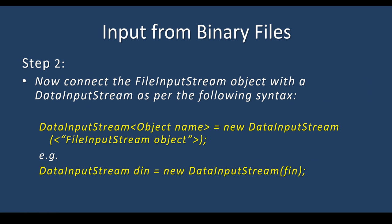Step 2: connect the FileInputStream object with a DataInputStream as per the following syntax. Same like the previous video where you connected FileOutputStream to DataOutputStream, here you are going to use DataInputStream. Create a DataInputStream object and connect the FileInputStream object there. DataInputStream din = new DataInputStream(fin). So you are going to connect the FileInputStream.